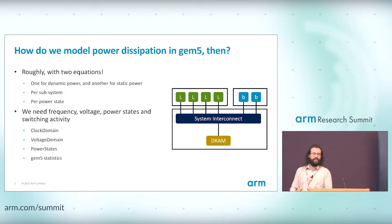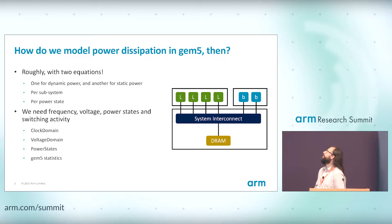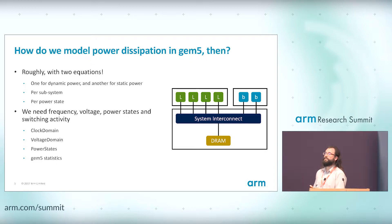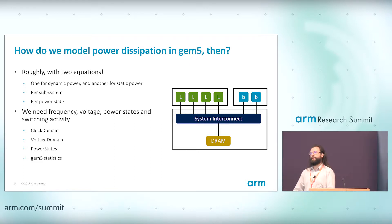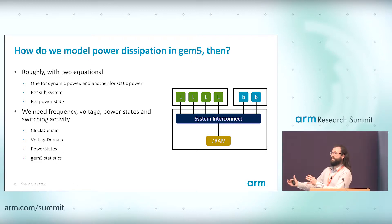How do we model this in GEM5? Roughly there are two equations: one for static energy and one for dynamic energy. First you need information about the voltage and frequency in the system — this is linked to things like DVFS. Then you have power states: each object can be on, in retention, or off, which greatly affects power consumed. Finally, GEM5 statistics give us information about switching activity, which links back to the models and can be used to calculate power.